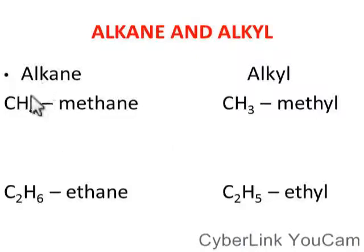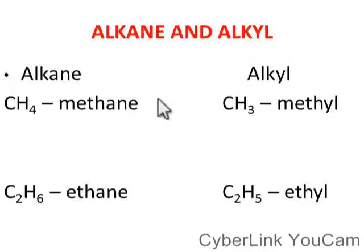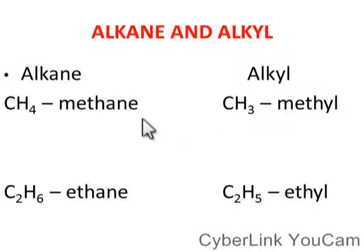Alkane, for methane, is CH4. The first member of alkyl is CH3. That molecular formula makes a very big difference here — alkane gives CH4, alkyl gives CH3. This is methane; this is methyl. This is ethane; this is ethyl.